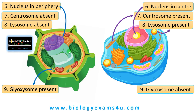Difference number 9: glyoxysome is present in plant cells whereas it is absent in animal cells. Glyoxysome is present in germinating seeds and contains enzymes for the glyoxylate pathway — it is involved in the conversion of lipids to sugar, especially in germinating seeds.